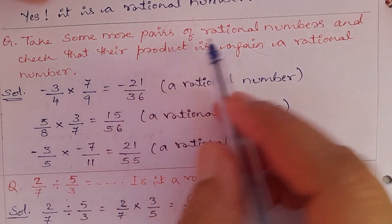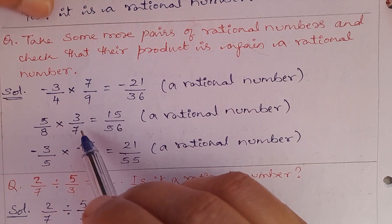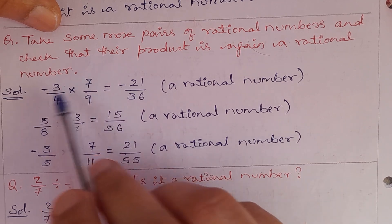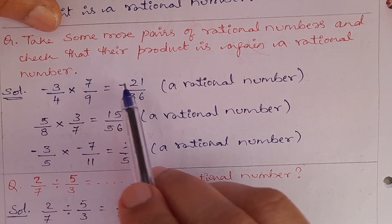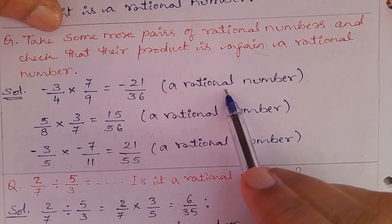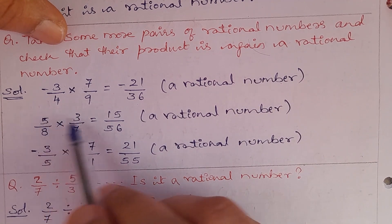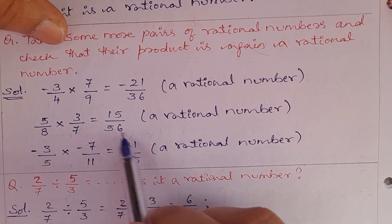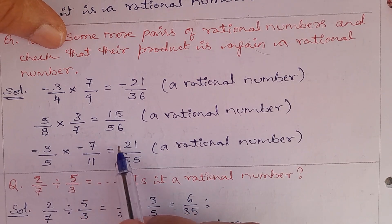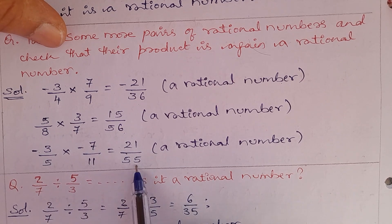Next, take some more pairs of rational numbers and check that their product is again a rational number. (−3/4) × (7/9): minus times plus is minus; 3 × 7 = 21, 4 × 9 = 36, giving −21/36. Then 5/8 × 3/7: 5 × 3 = 15, 8 × 7 = 56, giving 15/56. And (−3/5) × (7/11): minus into plus is minus; 3 × 7 = 21, 5 × 11 = 55, giving −21/55.